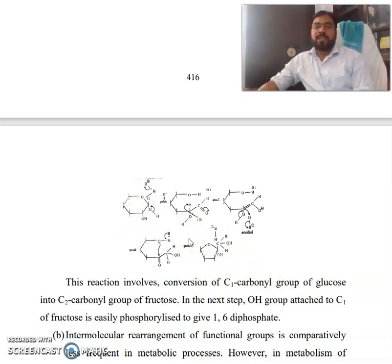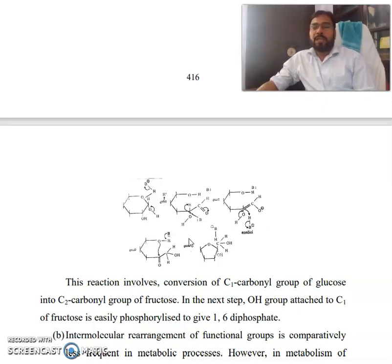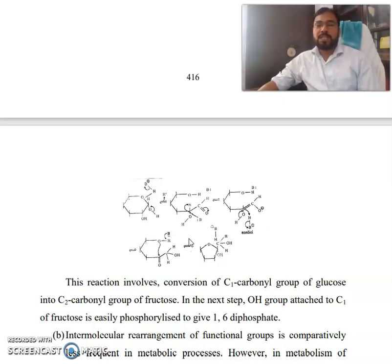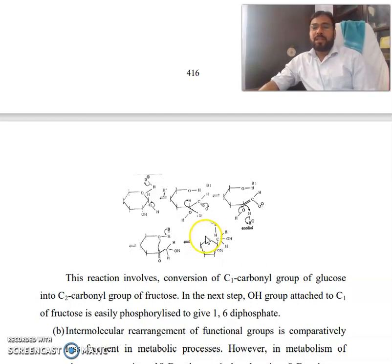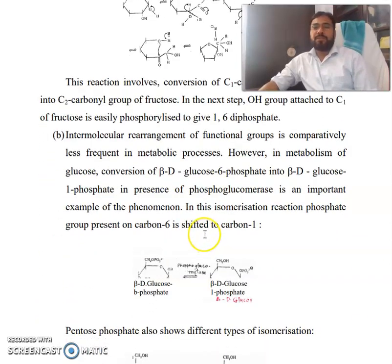So this reaction involves the conversion of the carbon-1 carbonyl group of glucose into the C2 carbonyl group of fructose. In the next step, the OH group attached to carbon-1 of fructose is easily phosphorylated to give fructose-1,6-diphosphate.